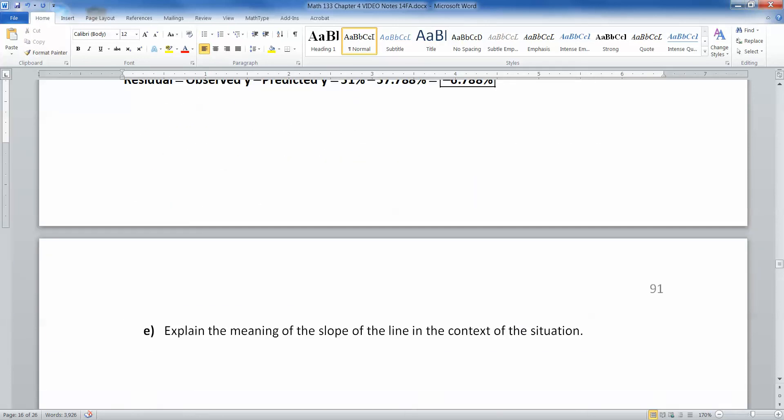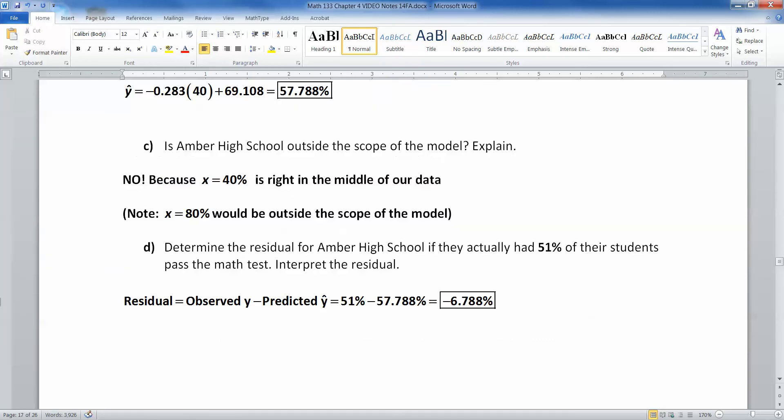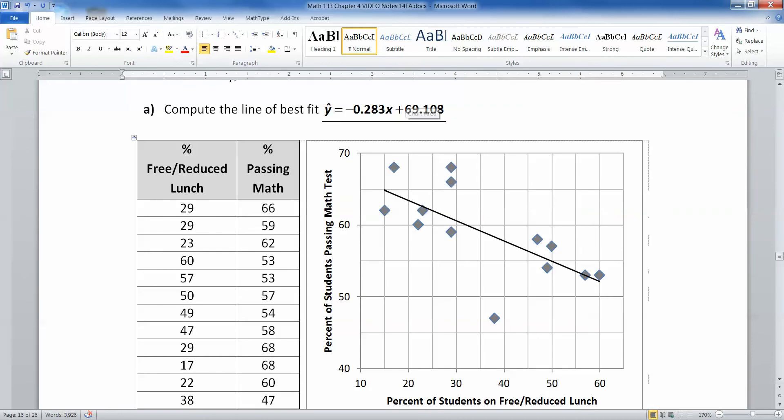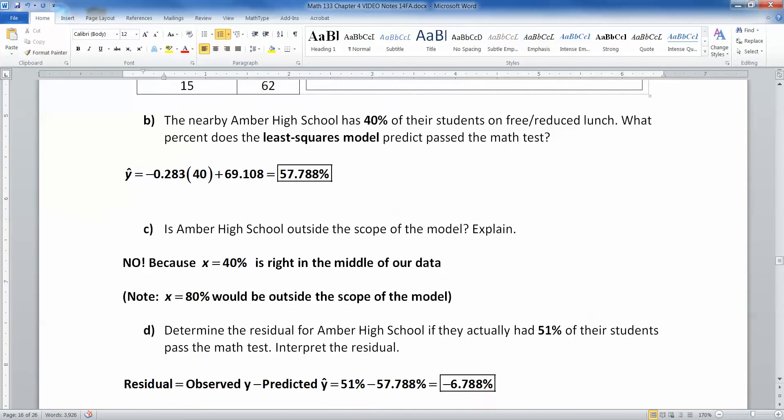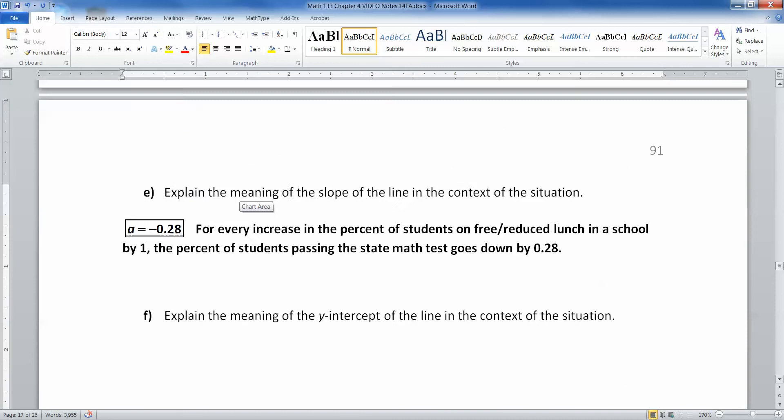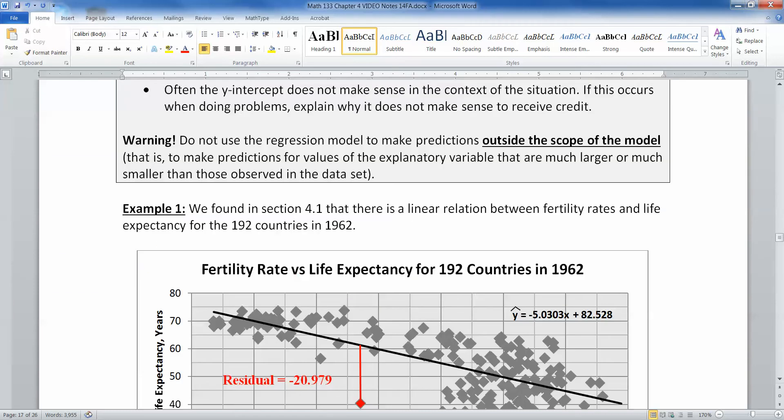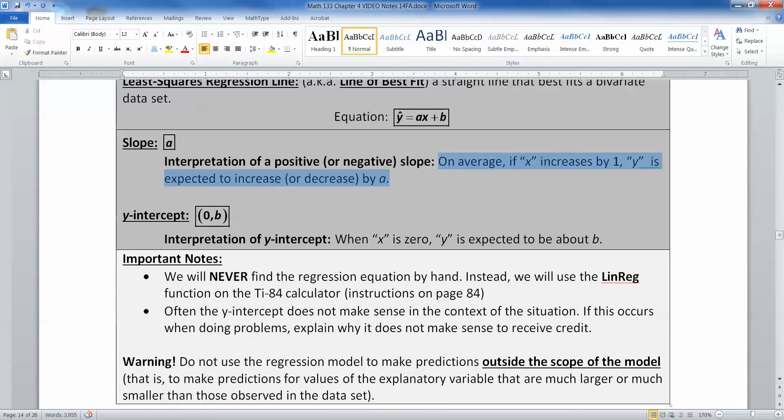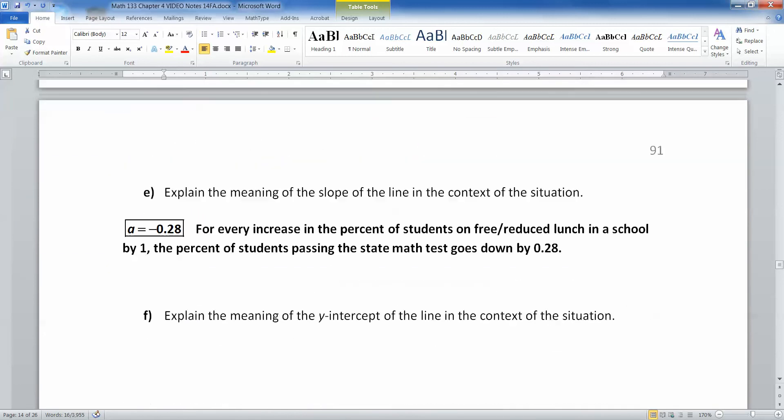Now for the next problem, we need to interpret the slope in the context of the situation. So the slope, if you recall, was negative 0.283, it's right there, it's the one that's multiplied by your X. That's always your slope. So if I'm going to do that, that would be A equals negative 0.283. Now, what we need to remember is that back here at the beginning, we said that the way to interpret slope is that on average, if X increases by one, the Y is expected to increase or decrease by A.